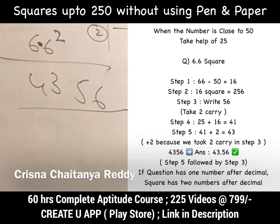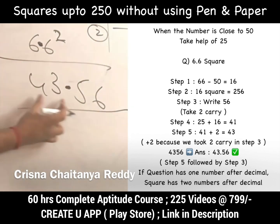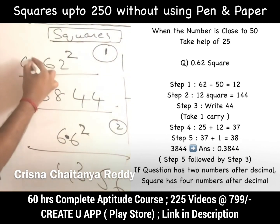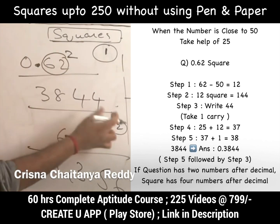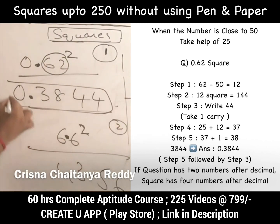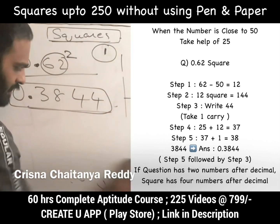For decimal questions: if the question is 6.6², since there is one digit after the decimal, there will be two digits after the decimal in the answer — so 43.56. If the question is 0.62², there are two digits after the decimal, so there will be four digits after the decimal in the answer — 0.3844.